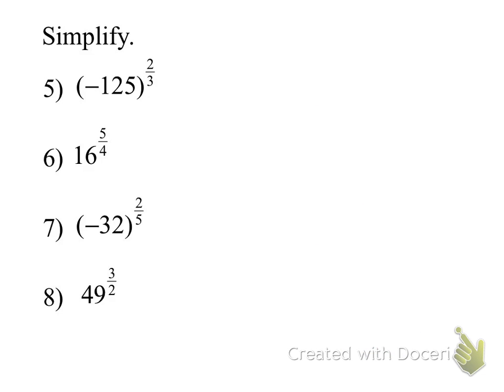Here are a few more with negative numbers. The cube root of negative 125, and then squared. The cube root of negative 125 is negative 5, and then we square it and we get 25. Pause the recording and now try the next three.